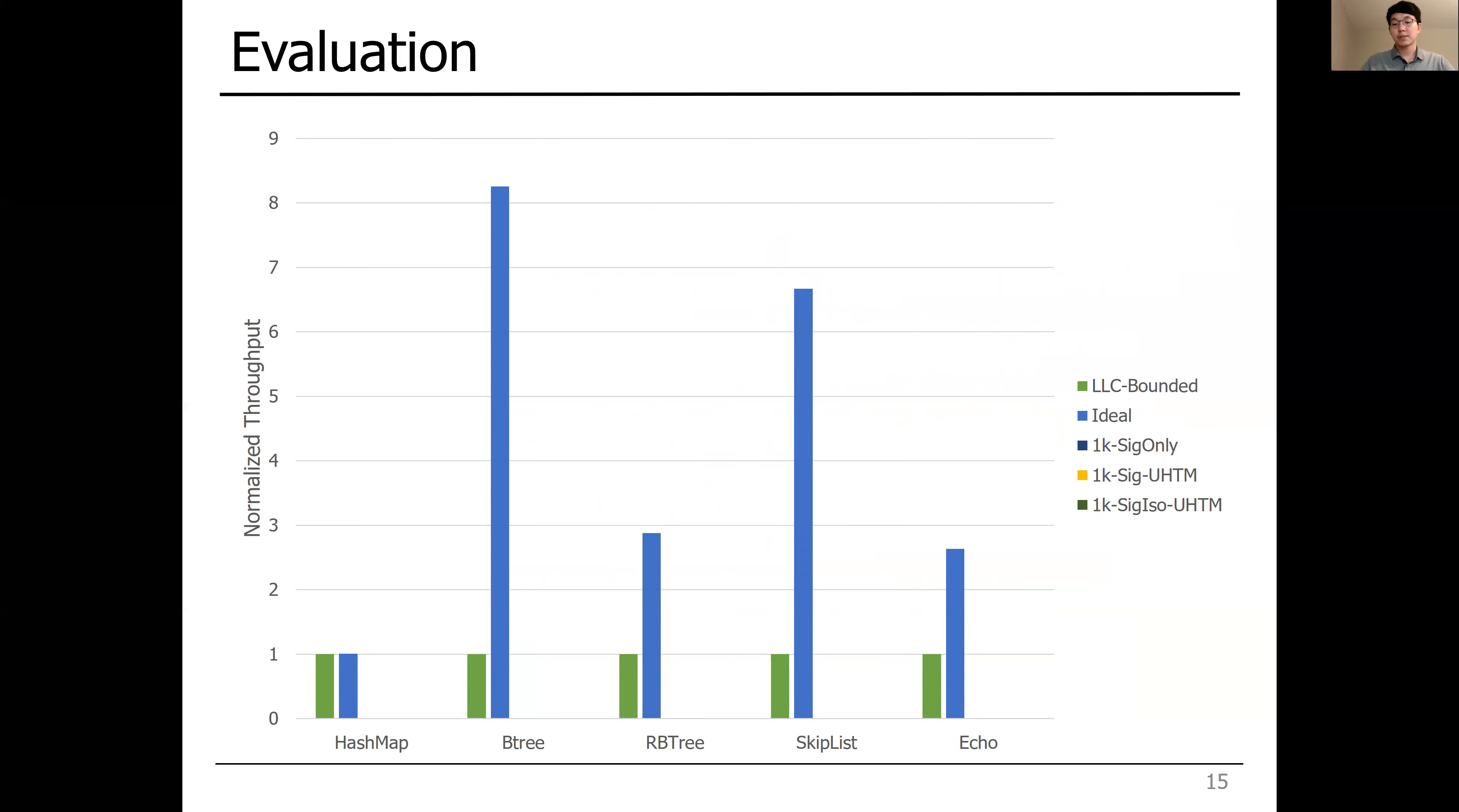In benchmarks such as B-tree, RB-tree, and Skiplist, the ideal HTM shows substantially higher throughput than the baseline, showing up to 8.2x throughput in B-tree.